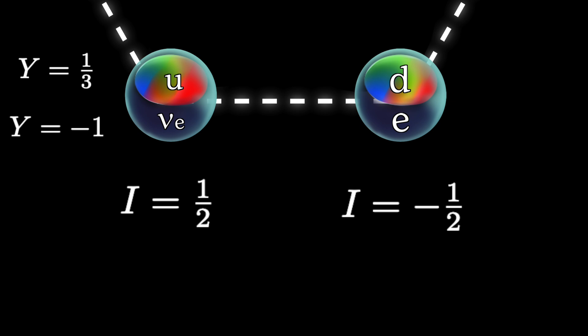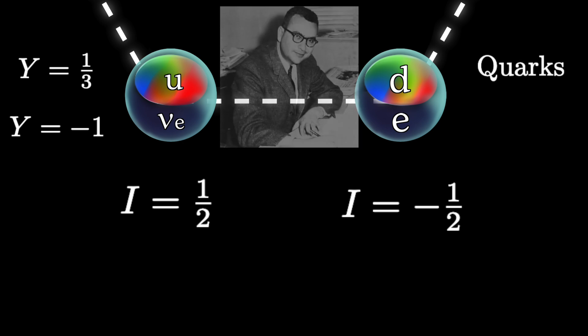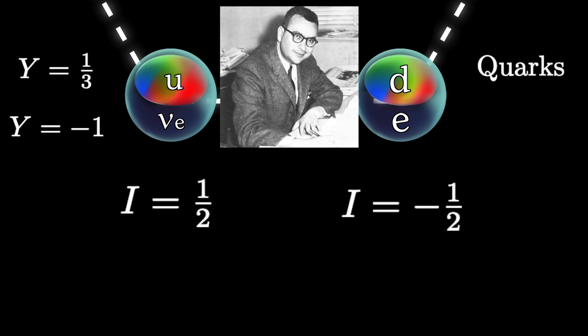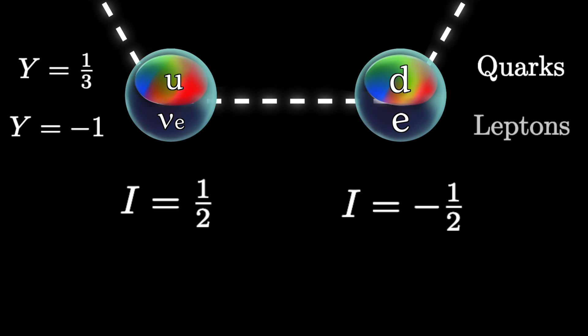The ones at the top are called quarks, because Murray Gell-Mann felt whimsical that day, and the ones at the bottom are called leptons, because it means small in Greek, and whoever named them hateth fun.